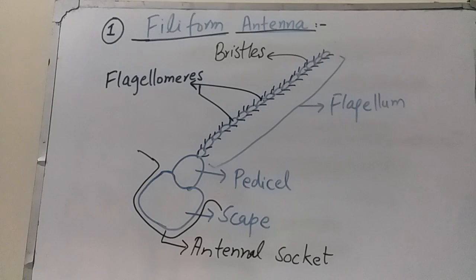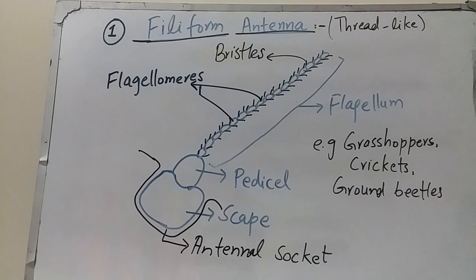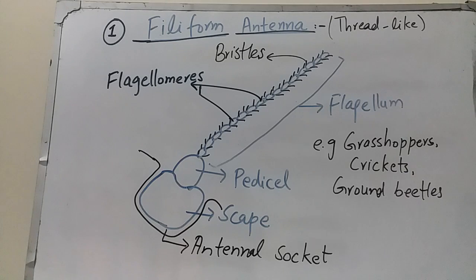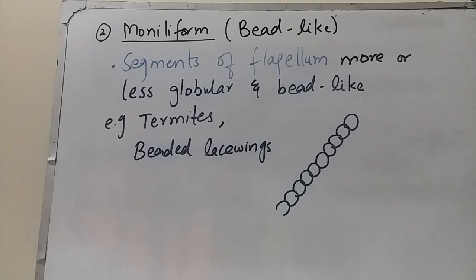The basic form of antenna is filiform. There are about 15 different types of antennae found in insects, and antenna is also used in the classification of class Insecta. Filiform means thread-like. In filiform antennae, the segments of the flagellum are cylindrical and of the same thickness, like a thread, with segments of equal size. Filiform antennae are found in grasshoppers, crickets, and ground beetles.